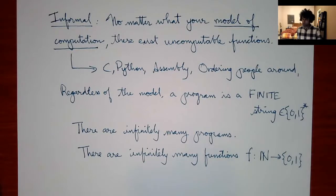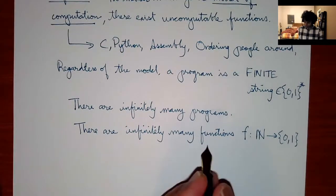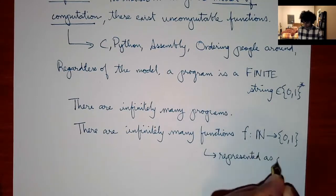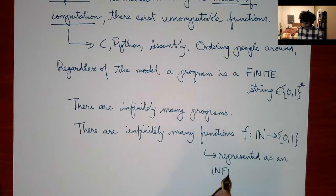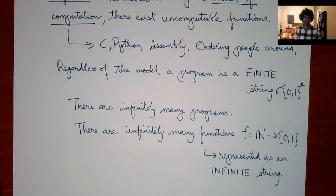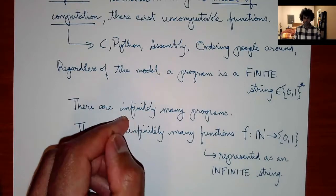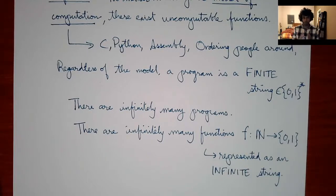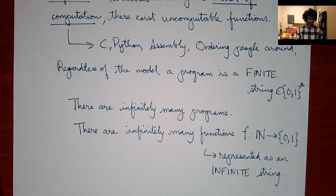This is important: a function is represented as an infinite string. A function is an infinite string; a program is a finite string. Nonetheless, there are infinitely many programs and infinitely many functions. To be clear: programs are finite strings, functions are infinite strings, but there are infinitely many of both.